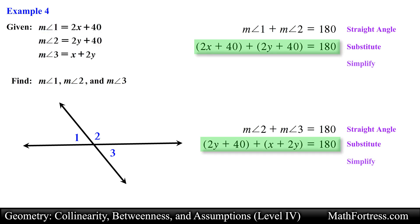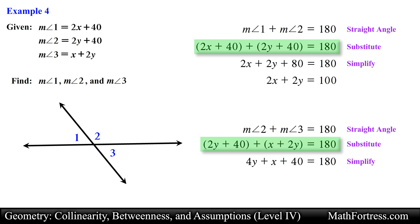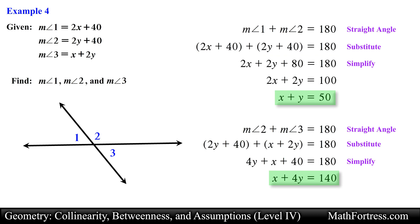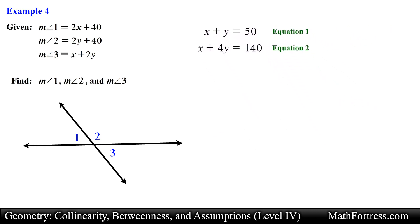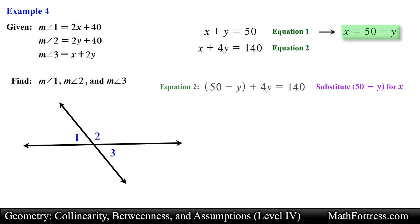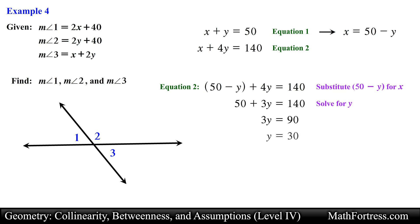We substitute the algebraic expressions into both geometric relations and simplify, keeping variables on the left side and constants on the right side. We are now faced with a system of linear equations, so we will use the substitution method. Solving for x in the first equation and substituting into the second equation, then simplifying and collecting like terms, we solve for the variable y and obtain y equals 30.